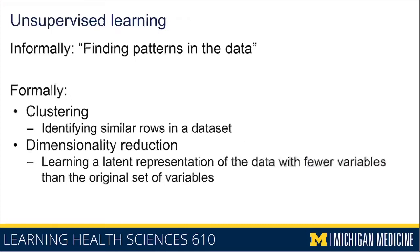If my dataset has a thousand variables and many of those variables are similar to each other, I may want to learn some representation of my data that only involves a handful of variables. When people are looking at these massive datasets, it's not uncommon to want to plot that data on two axes — an X and a Y axis. Many dimensionality reduction algorithms are really focused on allowing you to more easily visualize data that has a lot of different columns where you can't plot all the columns at once.